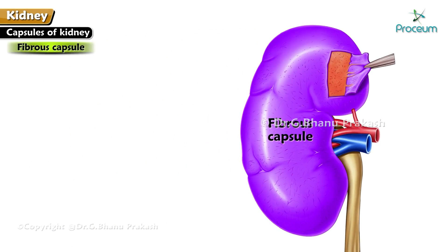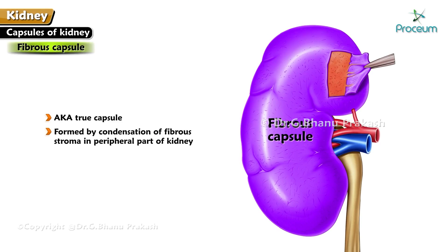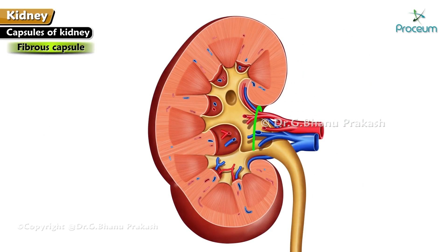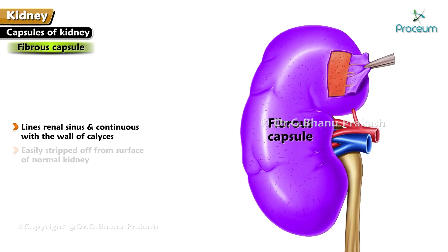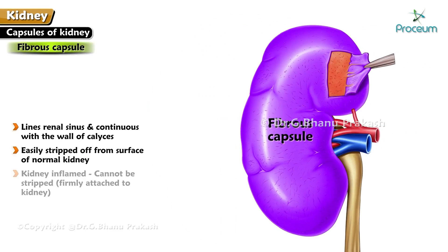The fibrous capsule, also known as the true capsule, is formed by condensation of fibrous stroma in the peripheral part of the kidney. It is a thin membrane which closely covers the entire kidney, passes through the hilum, and lines the renal sinus, being continuous with the wall of the calyces. It can be easily stripped off from the surface of a normal kidney, but if the kidney is inflamed it cannot be stripped off as it is firmly attached.